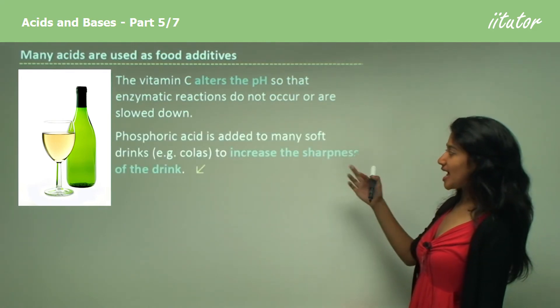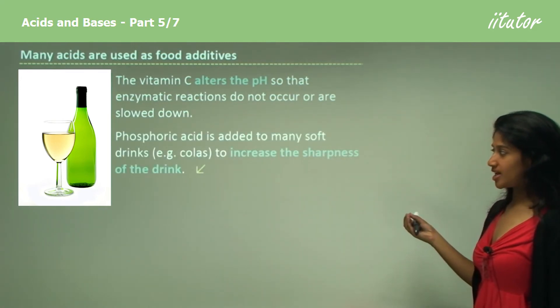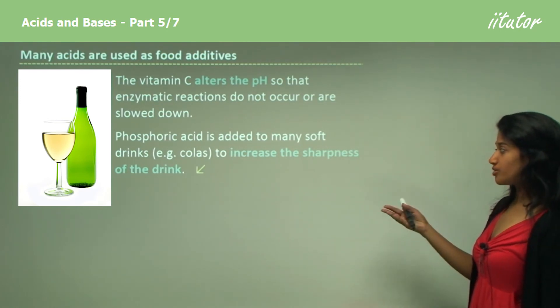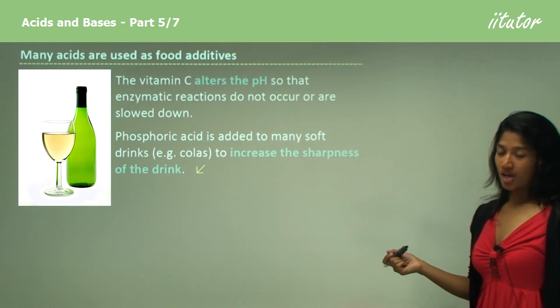Phosphoric acid is added to many soft drinks, for example colas, to increase the sharpness of the drink.